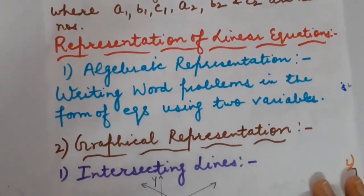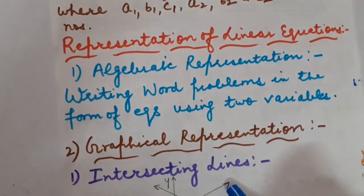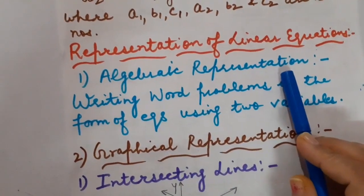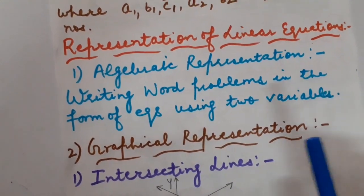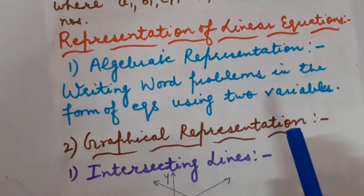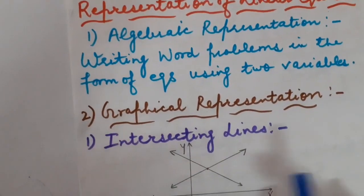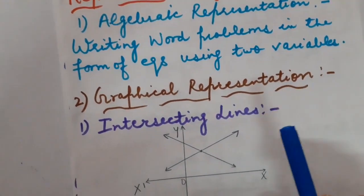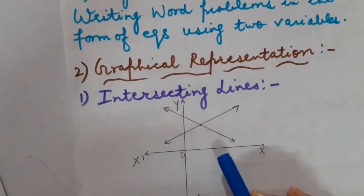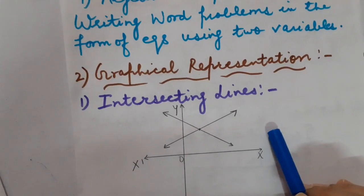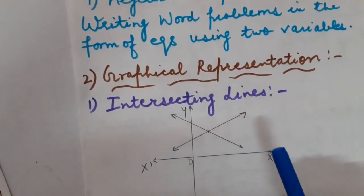In my previous video, children, I made you understand that the representation of a pair of linear equations is of 2 kinds. Number 1 is Algebraic Representation — whenever you have any word problem, using 2 different variables you can form a pair of linear equations. The other one was Graphical Representation. Whenever we plot coordinates based on a pair of linear equations, the graph of a linear equation will always be a straight line.